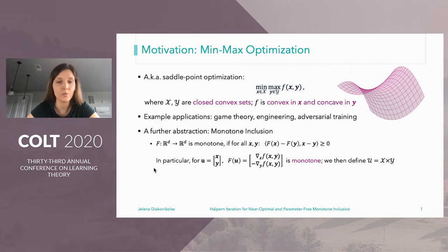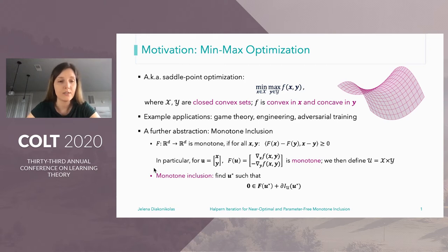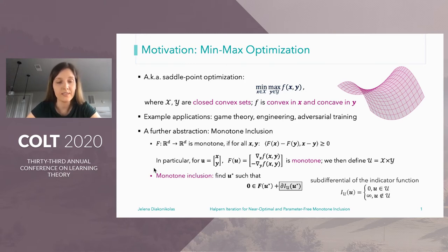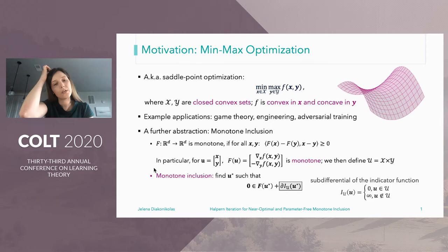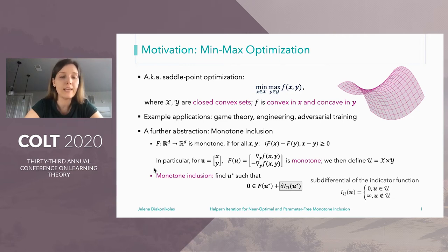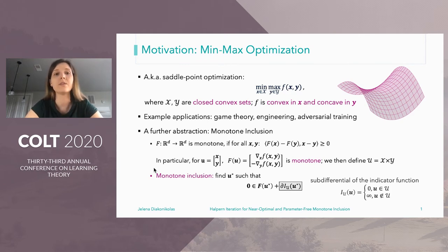In this case, our feasible set would be the product between the feasible sets for x and y. The monotone inclusion consists in finding a point u* such that the zero vector belongs to F(u*) plus the sub-differential set of the indicator function of the feasible set. In the unconstrained setup, this problem boils down to finding a zero of the operator F — or, going back to the min-max problem, finding a point with a zero gradient, also known as a stationary point.